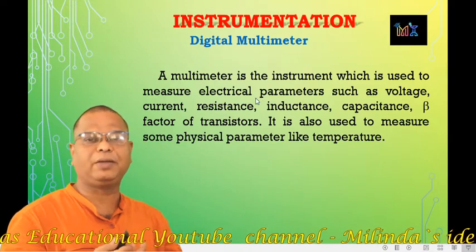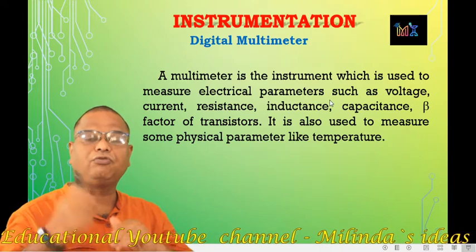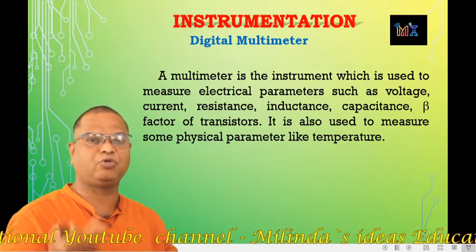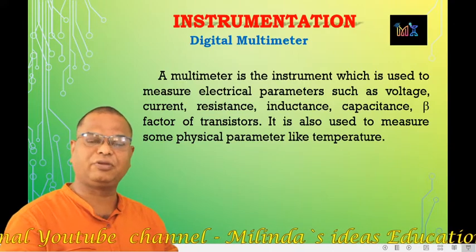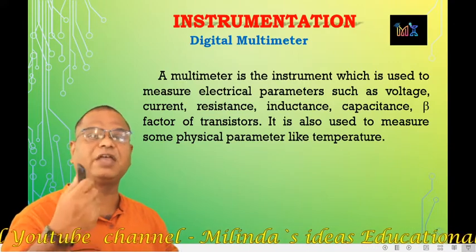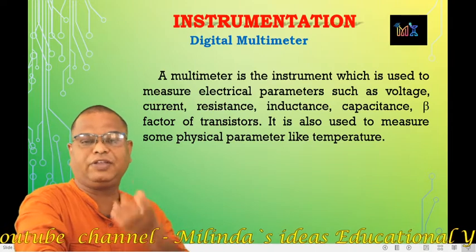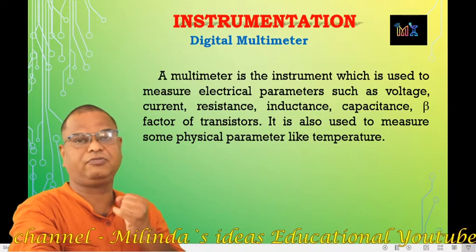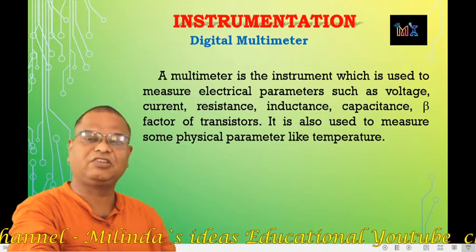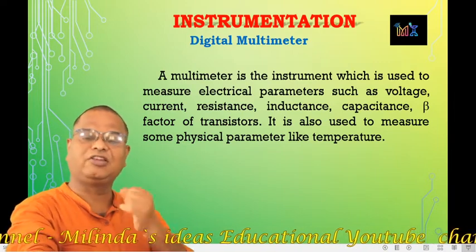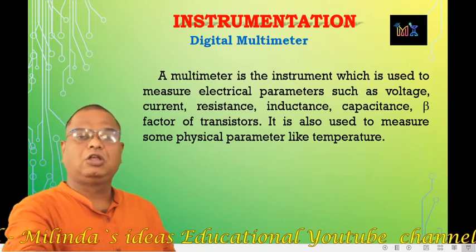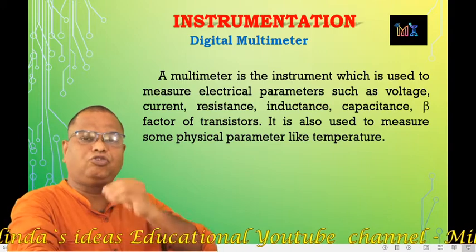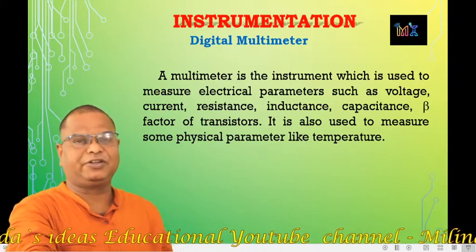All types of parameters can be measured using various meters. For example, for voltage measurement we require a voltmeter, for current measurement a current meter or ammeter, for resistance an ohm meter, and for physical parameters such as light we require a lux meter.